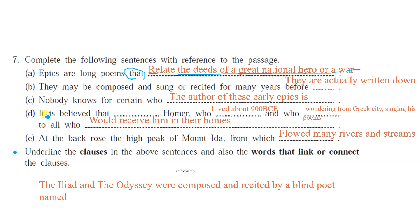Next sentence: 'They may be composed and sung or recited for many years before they are actually written down.' The connecting word here is 'before' and the clause is 'when they are actually written down.' Next: 'Nobody knows for certain who the author of this early epic is.' The connecting word is 'who' and 'who the author of this early epic is' is the clause.